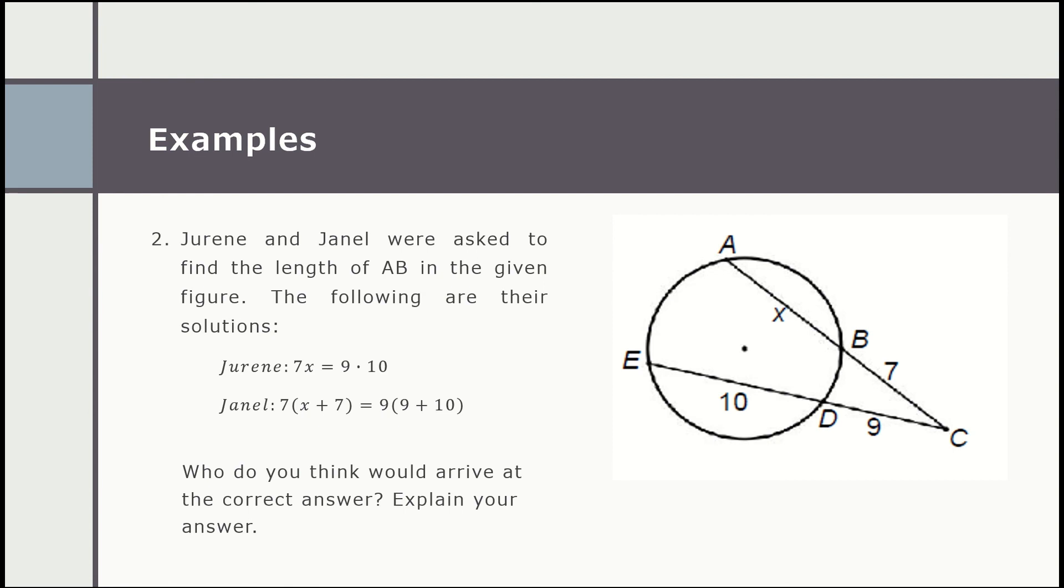So our formula would be: 7 multiplied by the length of AC, which is (x + 7), equals 9 multiplied by the length of EC, which is (9 + 10). As we can see, Janel is the one who will arrive at the correct answer. And that's how we solve problems involving circles.